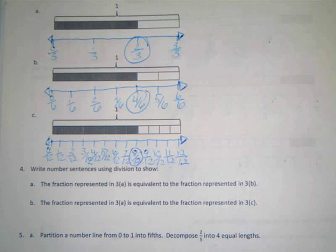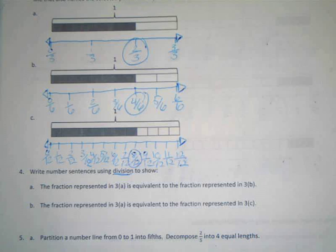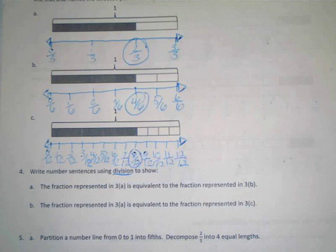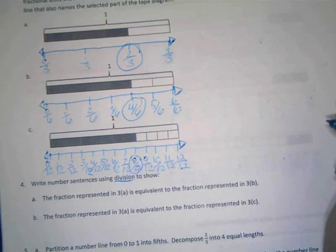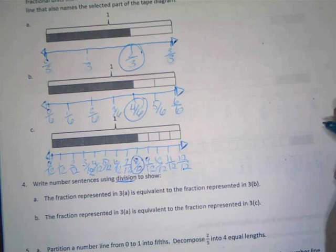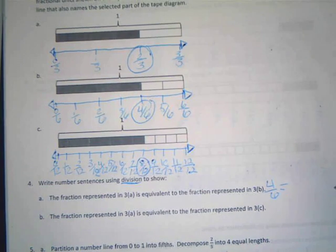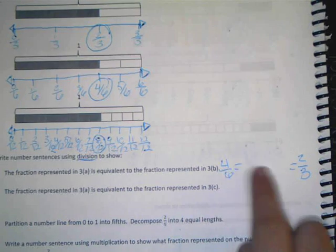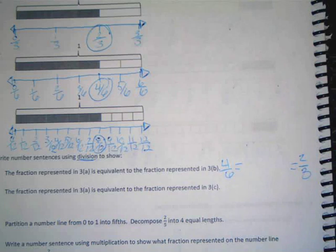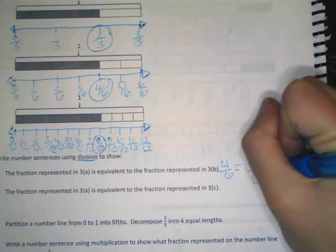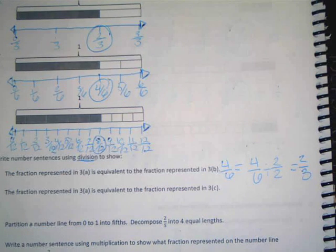Alright. Four, write number sentence using division to show. So what are we doing? Multiplication or division? Division. Division. I'm going to underline that so I remember. The fraction represented in 3A is equivalent to the fraction represented in 3B. So which one should I start with for this? 3A or 3B? 3A. 3B. Because our numbers are bigger in that fraction. So we have four sixths, and we need to prove that it is equal to two thirds. So we need to figure out what happens in the middle to show that these two are equal. And we have to use what? Division. Who knows what I can put in the middle here? Austin? Four sixths divided by two. You got it. Four sixths divided by two on top and two on bottom, which gives us two thirds.